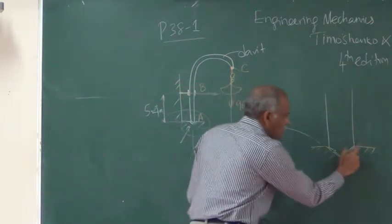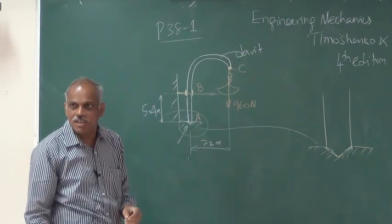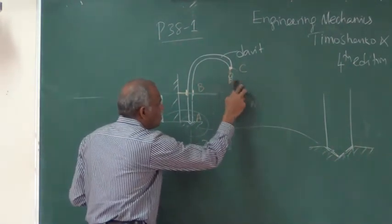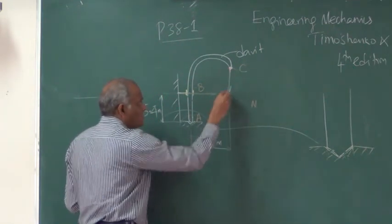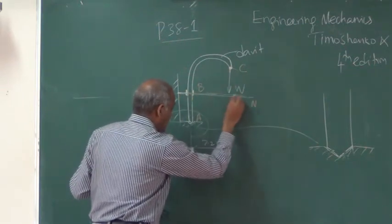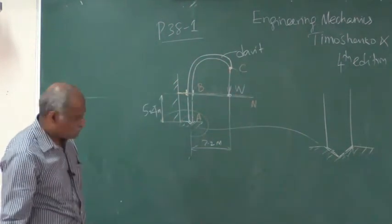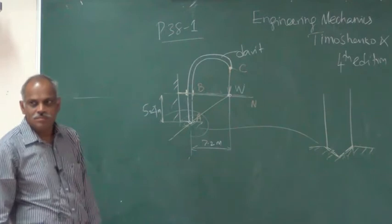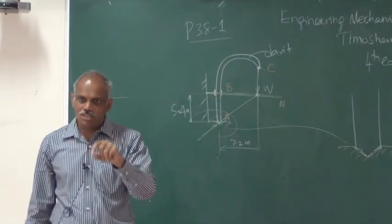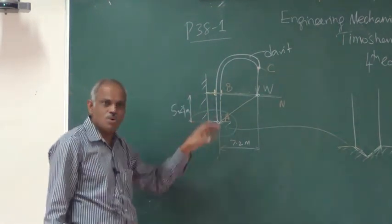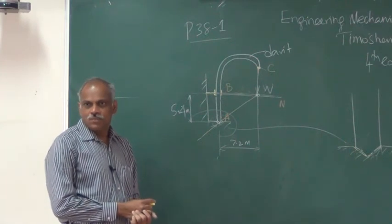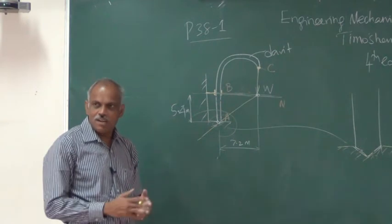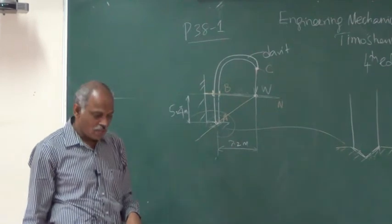Since the pivot at A can give a reaction at any angle, we remove the boat and consider: the weight acts downward at C, and the reaction at B has a known radial direction. Their lines of action intersect at a point, so the reaction RA must also pass through that point for equilibrium. It is a simple problem once you understand the nature of the supports.